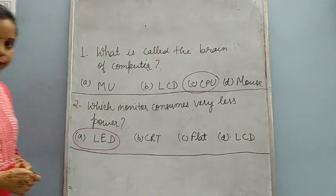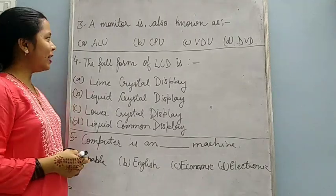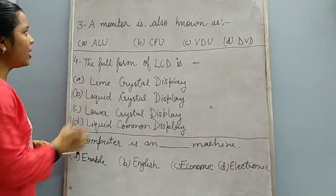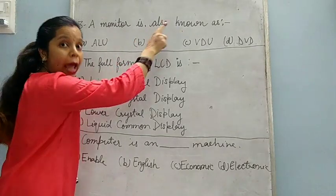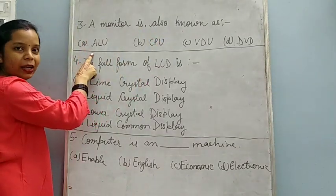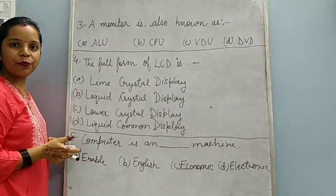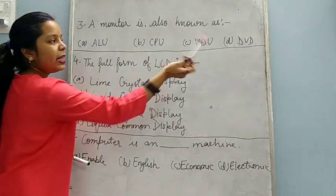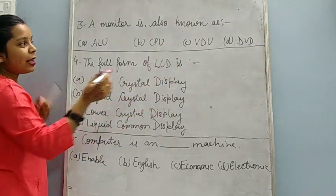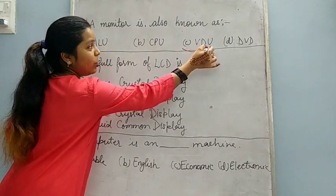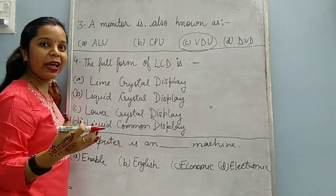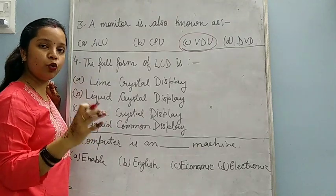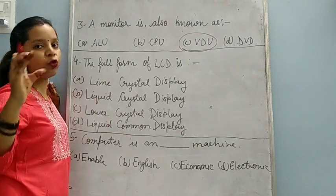Now next question is third one. A monitor is also known as - options are ALU, CPU, VDU, DVD. Now your answer is VDU. Monitor is also known as VDU, Visual Display Unit. Full form of VDU is Visual Display Unit.